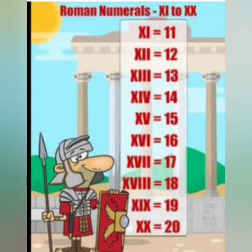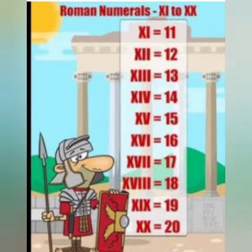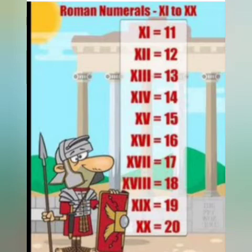To write 15, first make the expanded form: 10 plus 5, so X and V. For 16, expanded form is 10 plus 6, so X and VI. For 17, X is for 10 and VII is for 7. For 18, it is 10 plus 8, so X and VIII — remember I is written 3 times. For 19, it is X and IX — 10 plus 9. And 20 is 10 plus 10, so XX. I hope writing numerals 11 to 20 is now clear.